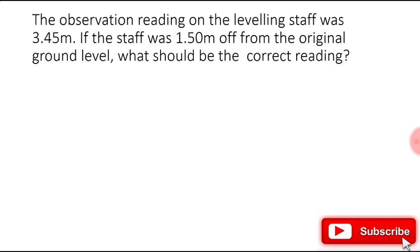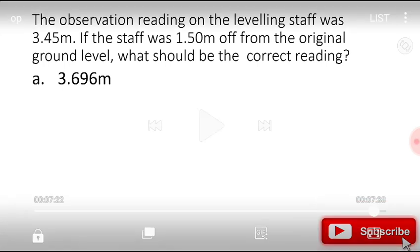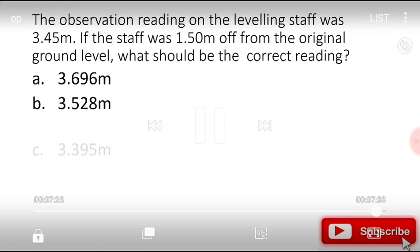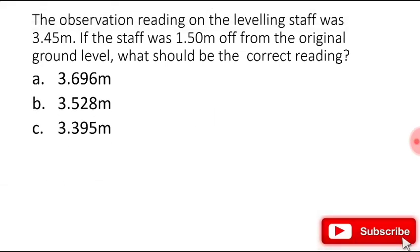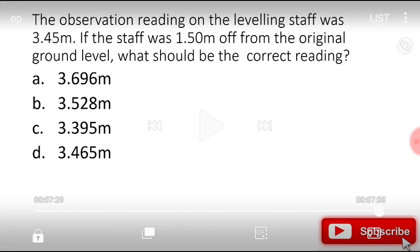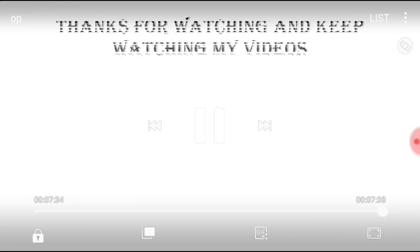The observed staff reading on the leveling staff was 3.45 meters. If the staff was 1.50 meters off from the original ground level, what should be the correct reading: 3.696 m, 3.528 m, 3.395 m, or 3.465 m? The right answer is 3.395 meters.